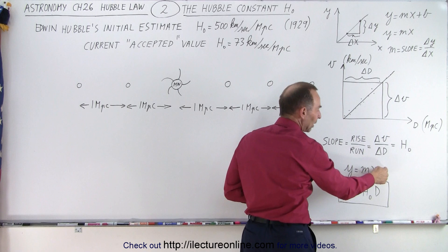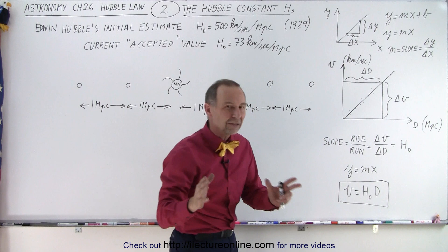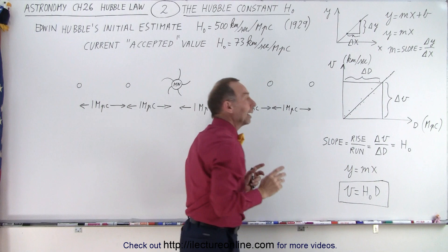So just like we have y equals mx without the plus b because the plus b is zero, we have v equals the constant H₀ times d. The H₀ is like the m in y equals mx that defines the slope of the line. So H₀ defines the slope of the line.